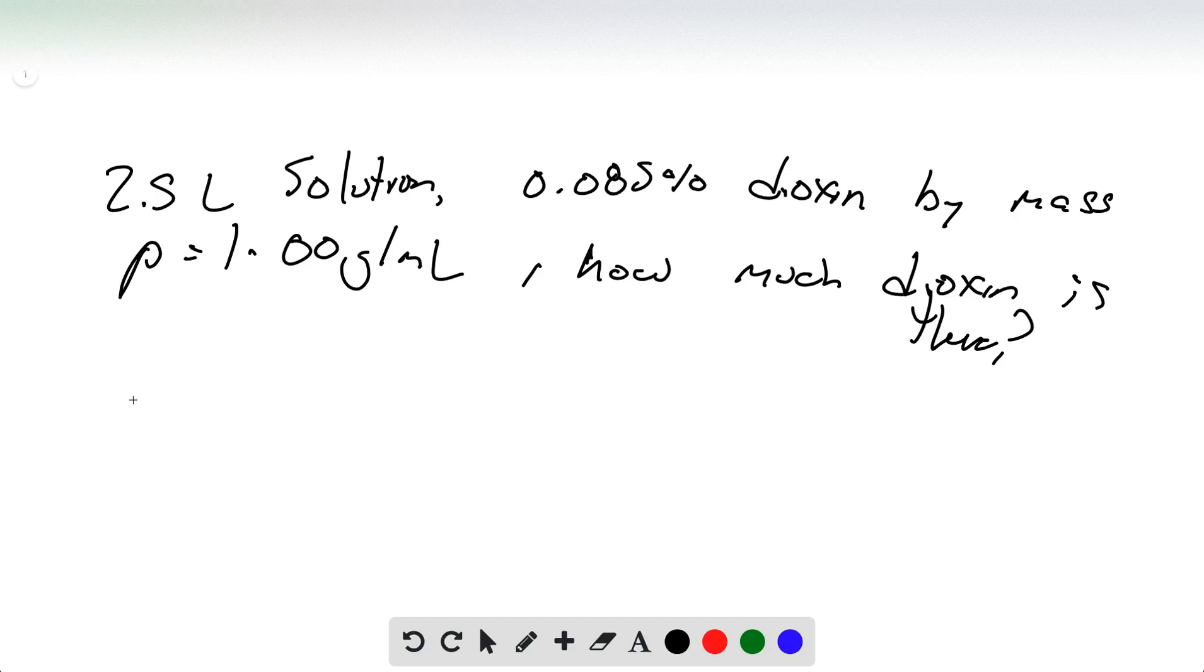Alright, so all we need to do, we know exactly what the mass percent is, so we multiply this percent. The mass of dioxin is just the concentration of dioxin times the volume of the solution times the density.